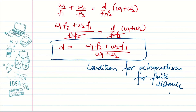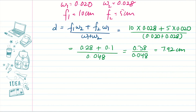Now let's get to the numerical part. We are given ω1 = 0.02, ω2 = 0.028, f1 = 10 cm, and f2 = 5 cm. We simply put all four values into the expression d = (ω1·f2 + ω2·f1)/(ω1 + ω2). After substituting all values, we get the separation d = 7.92 cm.